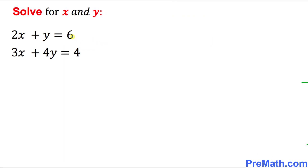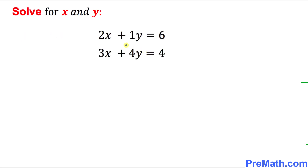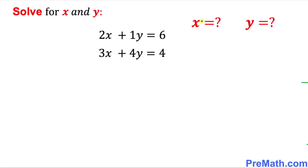Here is our very first example and we want to solve it for x and y. The very first thing, as we can see, the coefficient of y is missing, so by default it is always 1. We can rewrite this equation as 2x plus 1y equal to 6 and 3x plus 4y equals to 4.